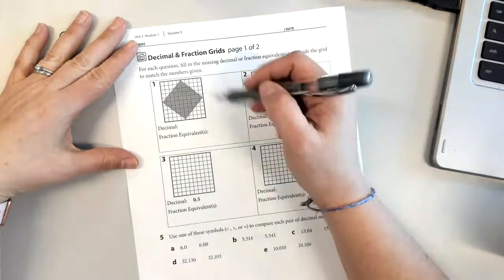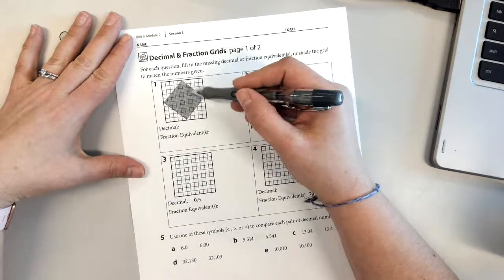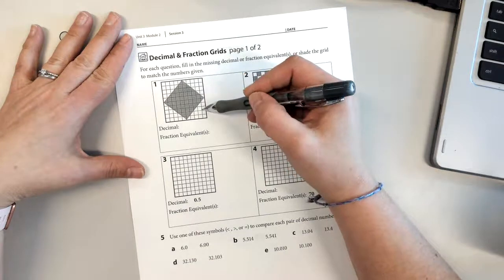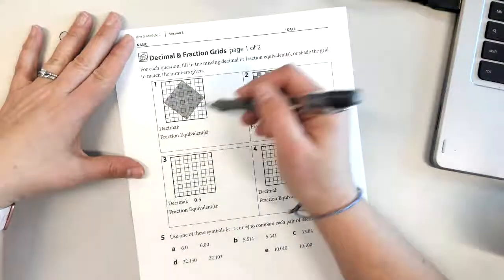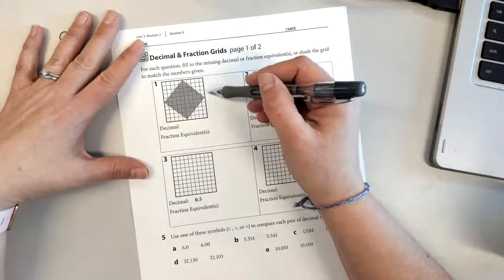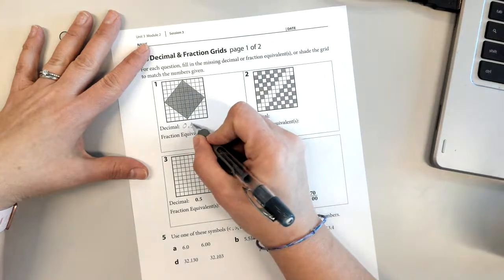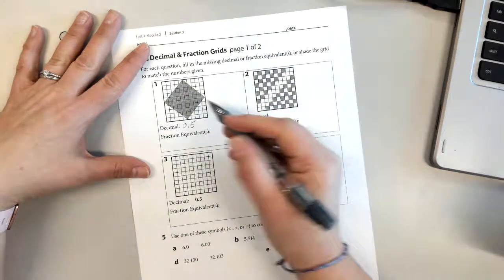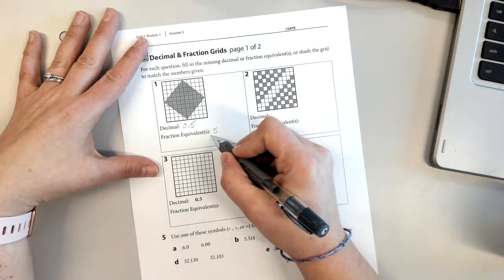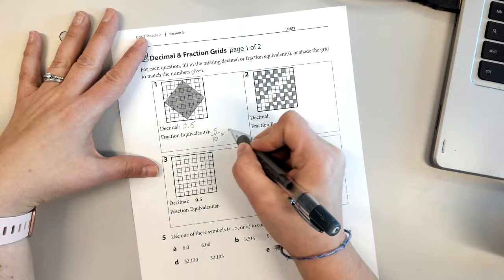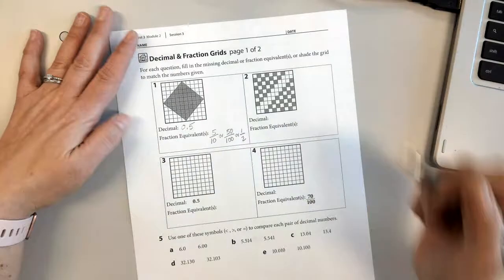I'm going to look at number one here, and I could sit and count them all, but I can also imagine that I'm going to move this piece right here and this piece right here, and then I can tell that this is half of this hundred that is colored in. So my decimal is going to be five tenths or fifty hundredths. Either way works just fine. I could say five tenths or fifty hundredths or one half for my fraction equivalent as well.